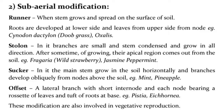Sub-aerial modifications: Runner — when stem grows and spreads on the surface of soil, roots develop at the lower side and leaves from the upper side from nodes, e.g., Cynodon dactylon (Dukegrass), Oxalis. Stolon — branches are small and stem condensed, growing in all directions; after some time their apical region comes out from the soil, e.g., Fragaria (wild strawberry), Jasmine, Peppermint. Sucker — the main stem grows in the soil horizontally and branches develop obliquely from nodes above the soil, e.g., Mint, Pineapple. Offset — a lateral branch with short internodes and each node bearing a rosette of leaves and tuft of roots at base, e.g., Pistia, Eichhornia. These modifications are also involved in vegetative reproduction.